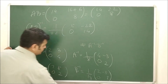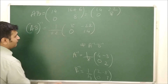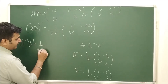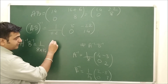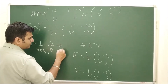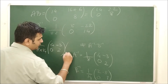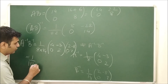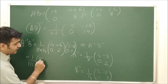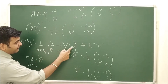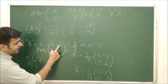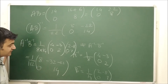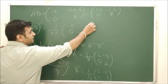Now what is A⁻¹B⁻¹? It is (1/8)(1/14) times [4, -3; 0, 2] multiplied by [2, -8; 0, 7], which equals 1/112 times the product. Computing: [4×2, 4×(−8)+(−3)×7; 0, (−8)×0+2×7] = [8, −32−21; 0, 14] = [8, −53; 0, 14].